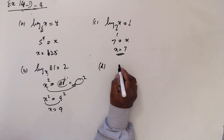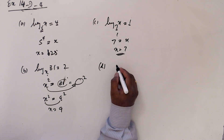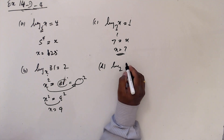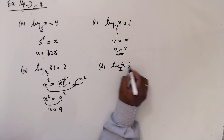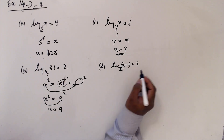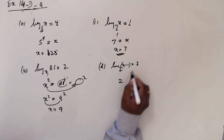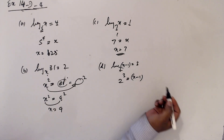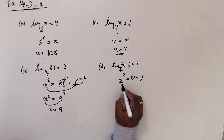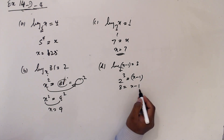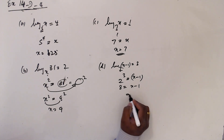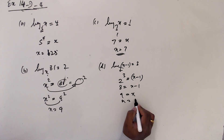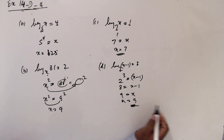And c: log base 7 of x equals 1 — this is the base, this is the power. 7 to the power 1 equals x, so x equals 7. D: log base 2 of x minus 1 equals 3 — this is the base, this is the power. 2 to the power 3 is x minus 1. This is 8 equals x minus 1, so 9 equals x, x equals 9.